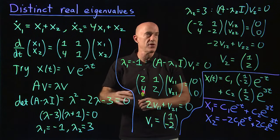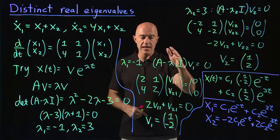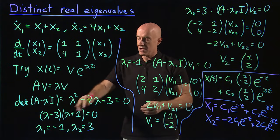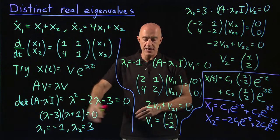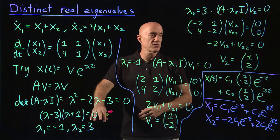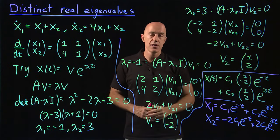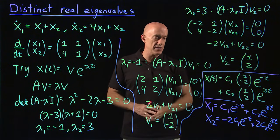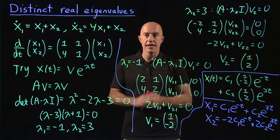minus 1 and 3. Using those eigenvalues, we can find the corresponding eigenvectors. Lambda 1 equals minus 1 has an eigenvector (1, -2). Lambda 2 equals 3 has an eigenvector (1, 2). Using the principle of superposition, we can write down the general solution for x.